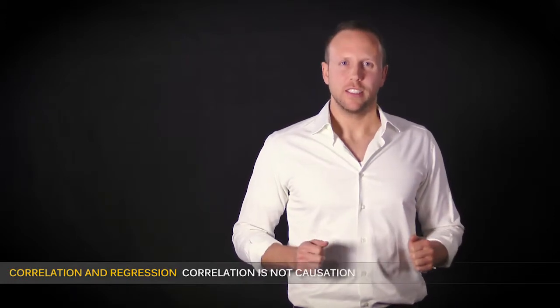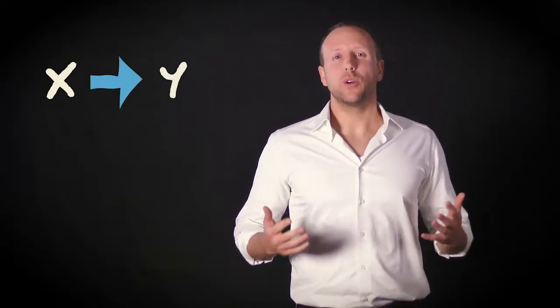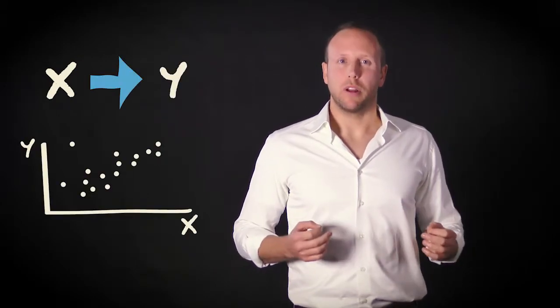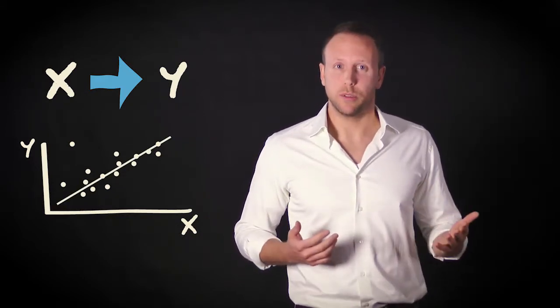When we do a regression analysis, we assume that the independent variable x explains the dependent variable y. Building on that assumption, we can make a scatter plot and let the computer draw the line that best describes the linear relationship between the two variables.